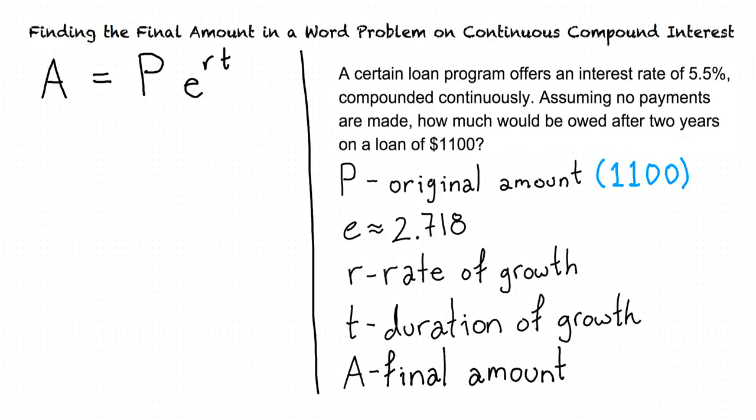R represents the rate of growth. In our problem, the rate of growth is 5.5%. When dealing with money, we can assume that the interest is the growth rate per year, unless it tells us otherwise. So this loan will grow at a rate of 5.5% per year. So does R equal 5.5?